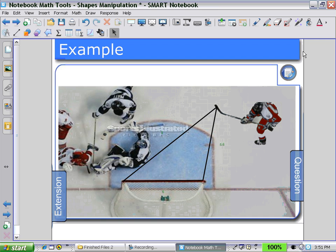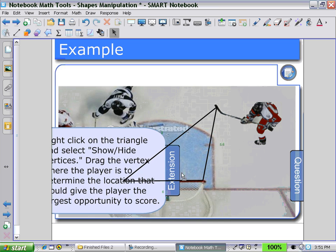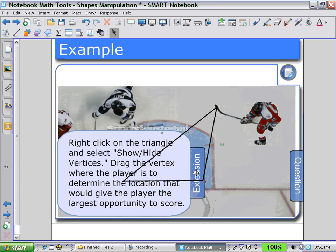Now the students can calculate using the 3 side lengths the angle required to get the puck into the net. An extension to that question: here we have right click on the triangle and select show and hide vertices. Drag the vertex where the player is to determine the location that would give the player the largest opportunity to score.